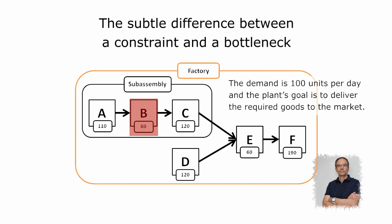Resource B is limiting Resource C, failing to process the required 100 units daily. Resource B is the limiting factor of the whole sub-assembly workshop, but B has little influence on the throughput of the plant. The plant's throughput is limited by Resource E, which is both a bottleneck and the constraint.